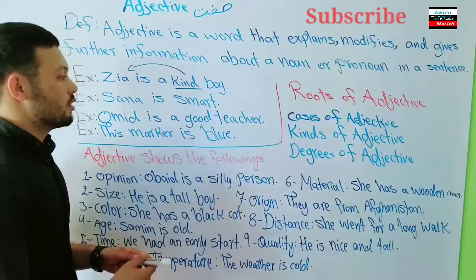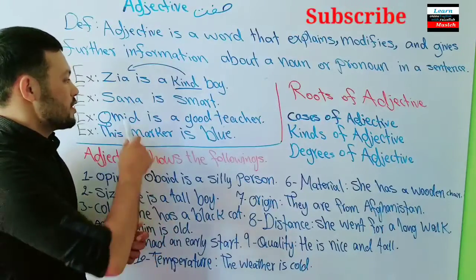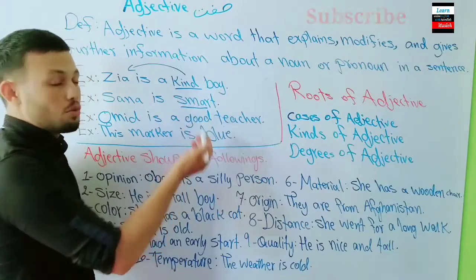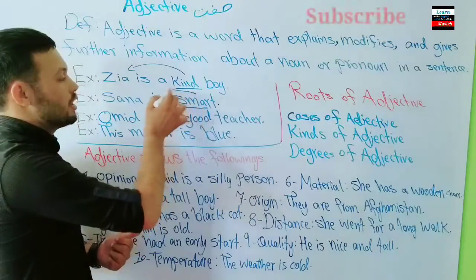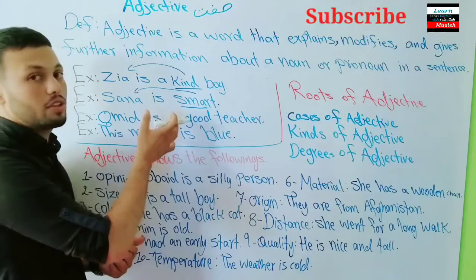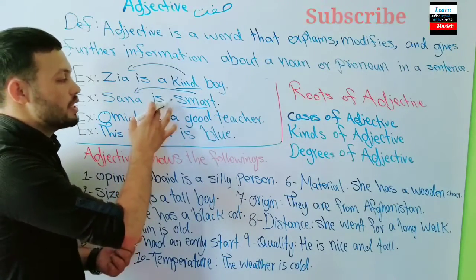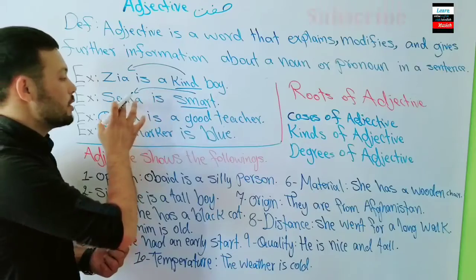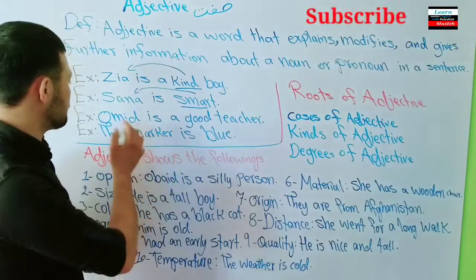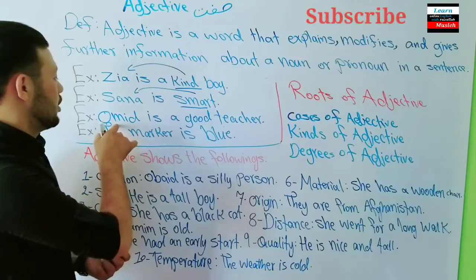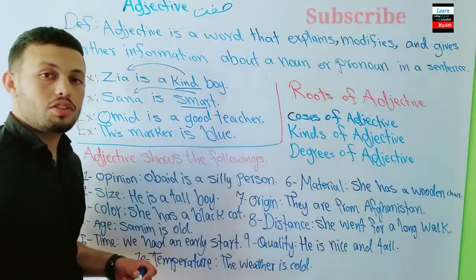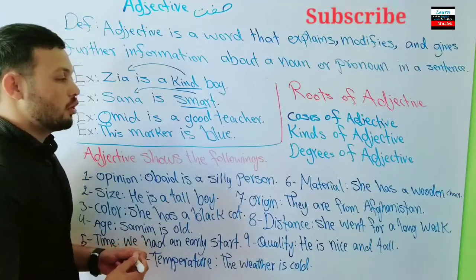Another example: 'Sanana is a smart girl.' Here 'smart' is the adjective. And: 'Umid is a good teacher.' In this sentence, 'good' is the adjective that modifies the noun 'teacher.'